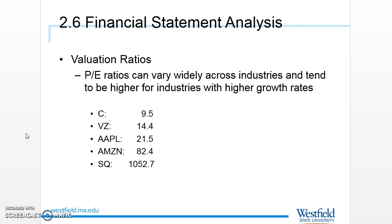P/E ratios come in many shapes and sizes, and there's no single right number — we compare against other companies and the firm's own history. For scale: Citigroup had a P/E of about 9.5, Verizon 14.4, Apple 21.5, Amazon 82.4, and Square over a thousand. Investors in Square were paying more than a thousand dollars for every dollar of current earnings, betting on explosive future growth. P/E ratios vary dramatically by industry, with technology consistently higher than telecom or banking.